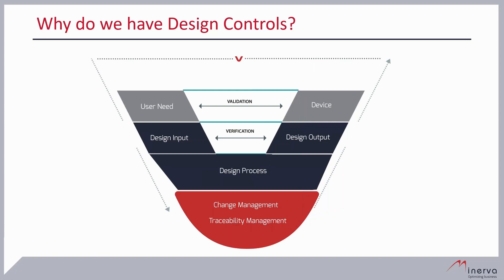The next slide shows the same content in the V-model, showing the relationships between elements. The left side of the V-model relates to design activities and data needed for them, while the right side relates to the results of the design. The design process takes the design input from the left side and generates the design output on the right side. Conformance of the design output is checked by verification, and validation checks the device definition against user requirements. All of this is covered by change management, which gives us traceability for all the data in that process.